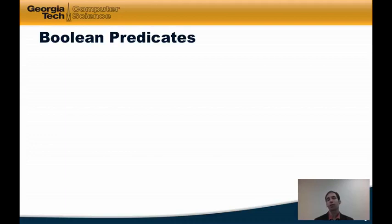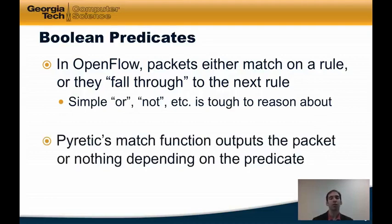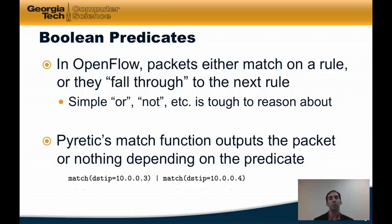In OpenFlow, packets either match on a rule or they fall through to the next match action rule. This makes it very difficult to express policies that involve conjunctions or negation. In contrast, Pyretic's match function outputs either the packet or nothing, depending on the value of the predicate. For example, here's a conjunction of two match predicates that will return packets that match on either destination IP address 1003 or destination IP address 1004.